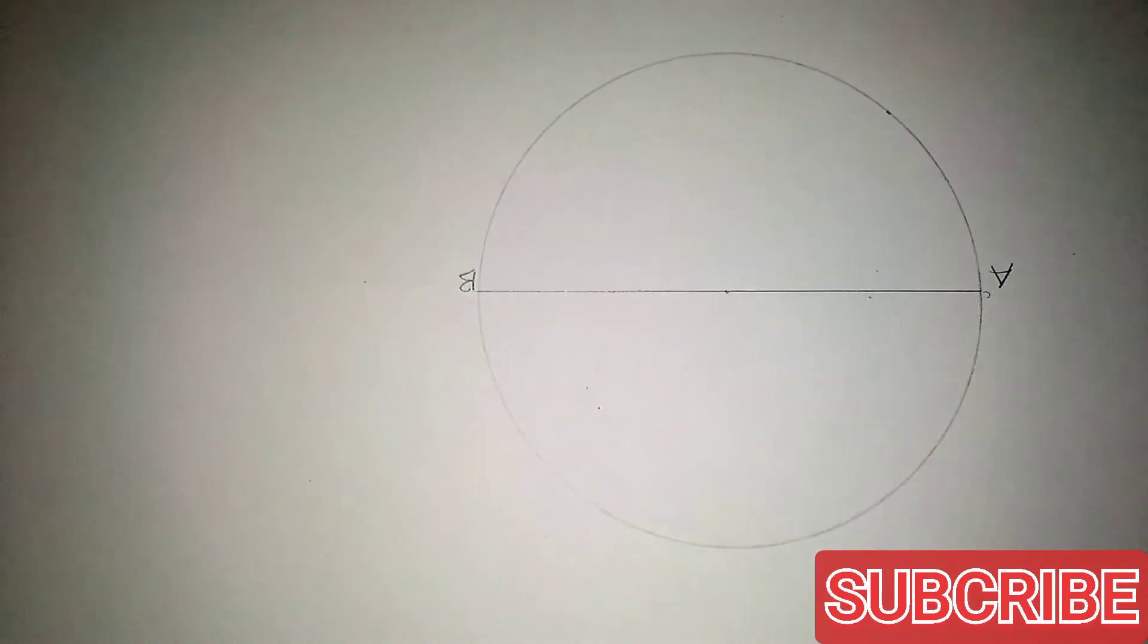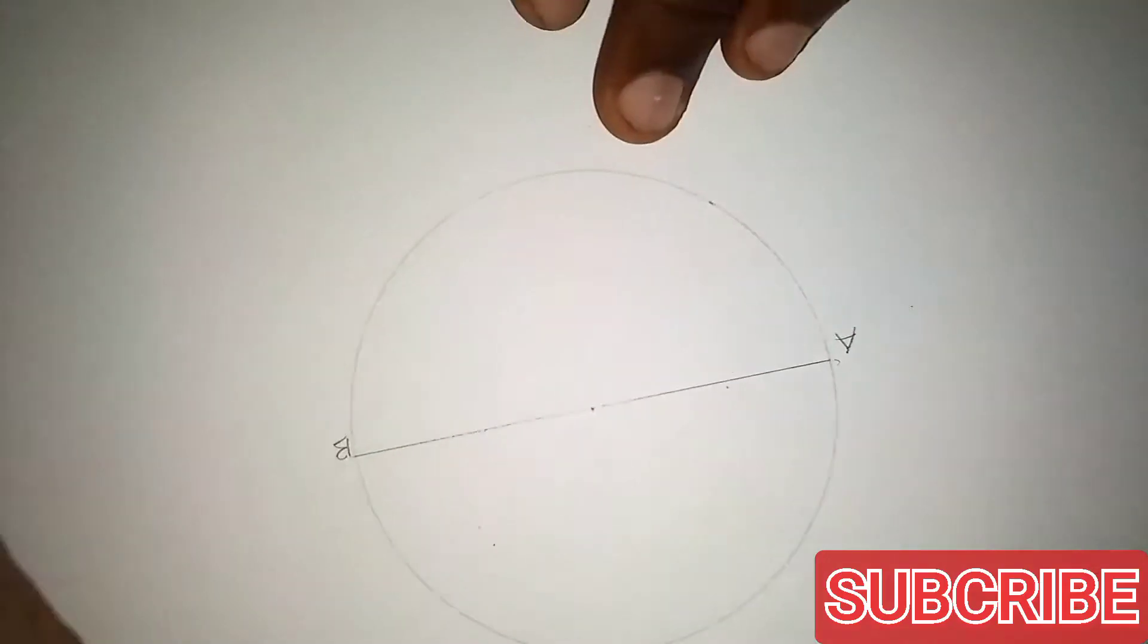Making A the point by setting an arc above and below the diameter, using the same radius.